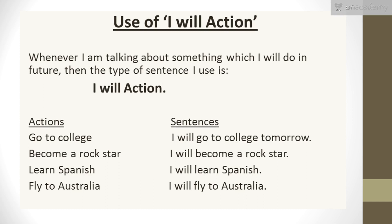Coming on to the first slide — use of 'I will action'. Whenever I am talking about something which I will do in future, the type of sentence I use is 'I will action'. We covered when we are doing something in the present, we covered when we were doing something in the past, and now we are covering doing something in future — that is 'I will action'. It's very simple.